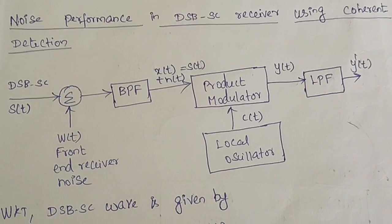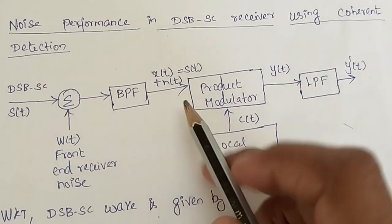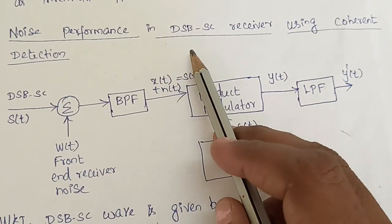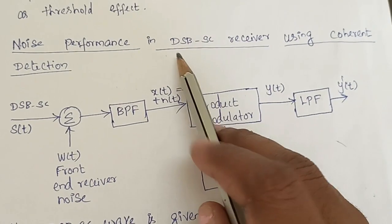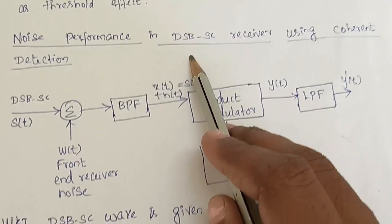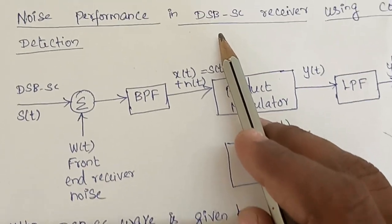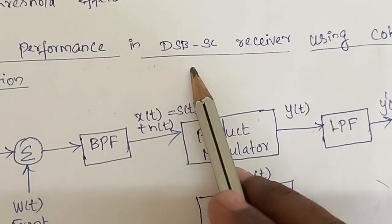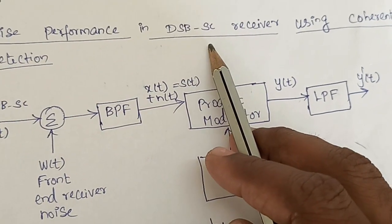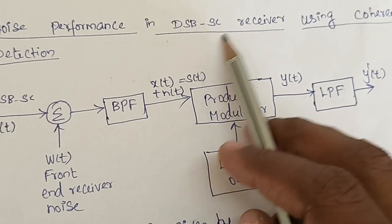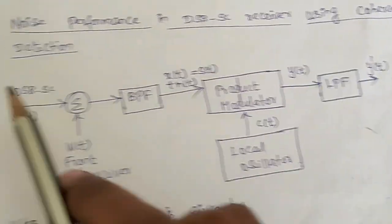Welcome students. In this lecture we are going to see the noise performance in DSBSC receiver using coherent detector. DSBSC stands for double sideband suppressed carrier, and a DSBSC wave can be demodulated with the help of a detector named as coherent detector.